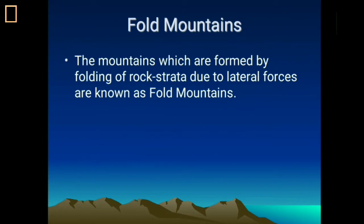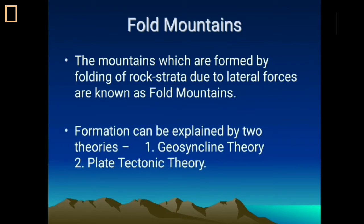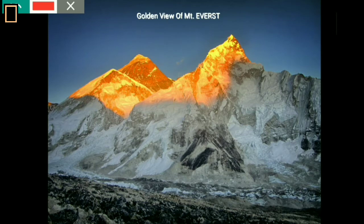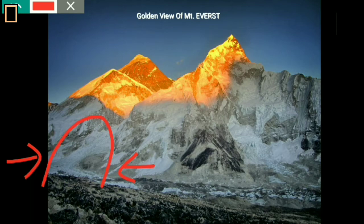There are two theories that explain fold mountains: the geosyncline theory and the plate tectonic theory. Before going into detail about the theories, we must understand the nature of folding of rock strata. There are two types of folding: anticline and syncline. In an anticline, rock layers move convex upward due to lateral forces — that is known as anticline. In a syncline, rock layers move downward, concave downward, due to forces from both sides — that is the syncline. Importantly, anticlines always form mountain peaks, while synclines form mountain valleys.